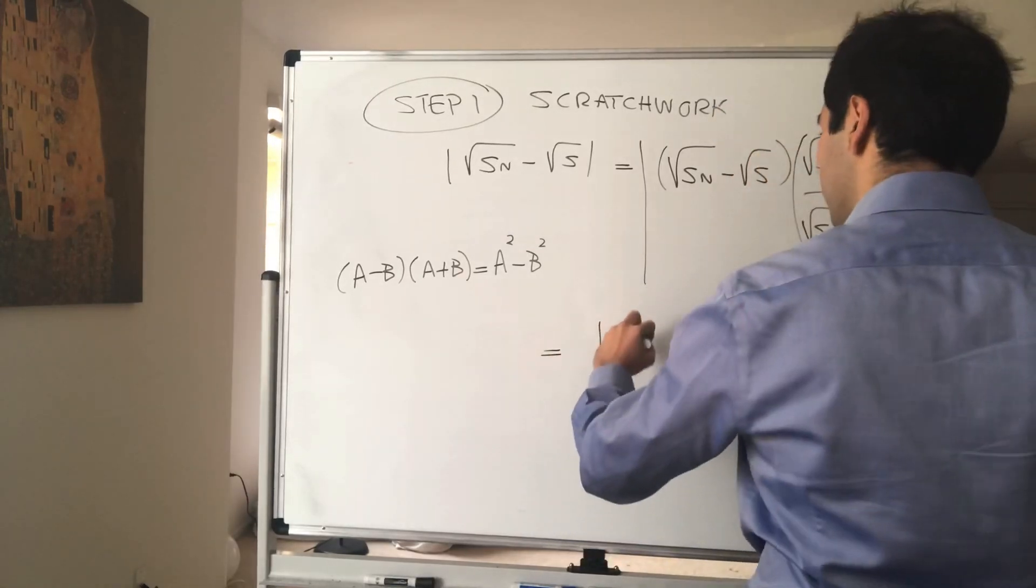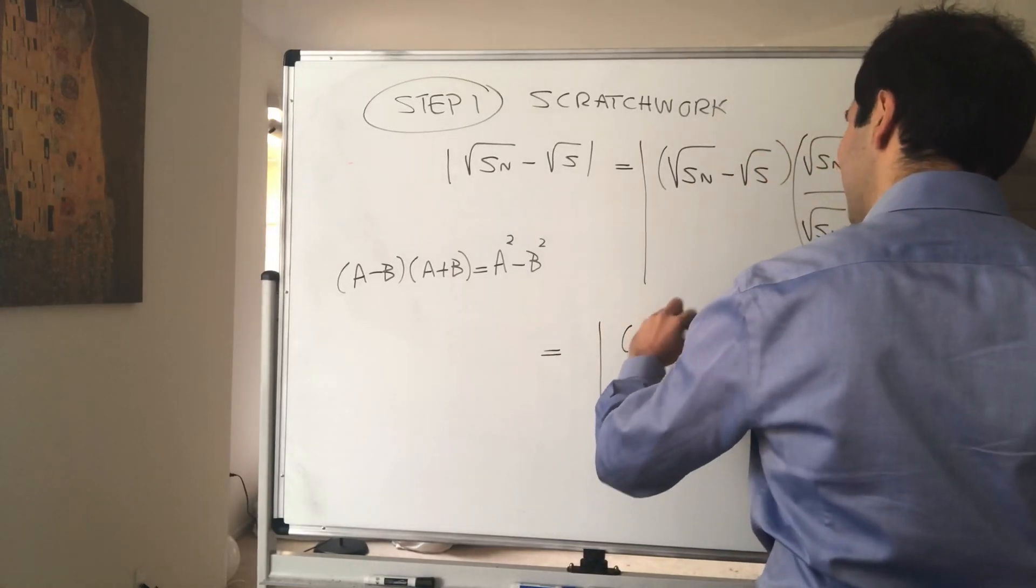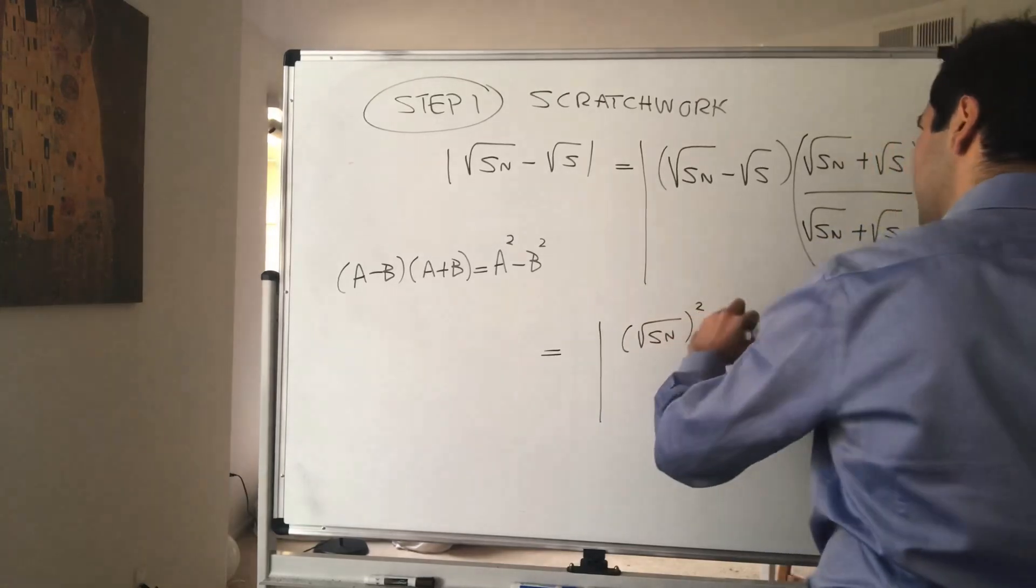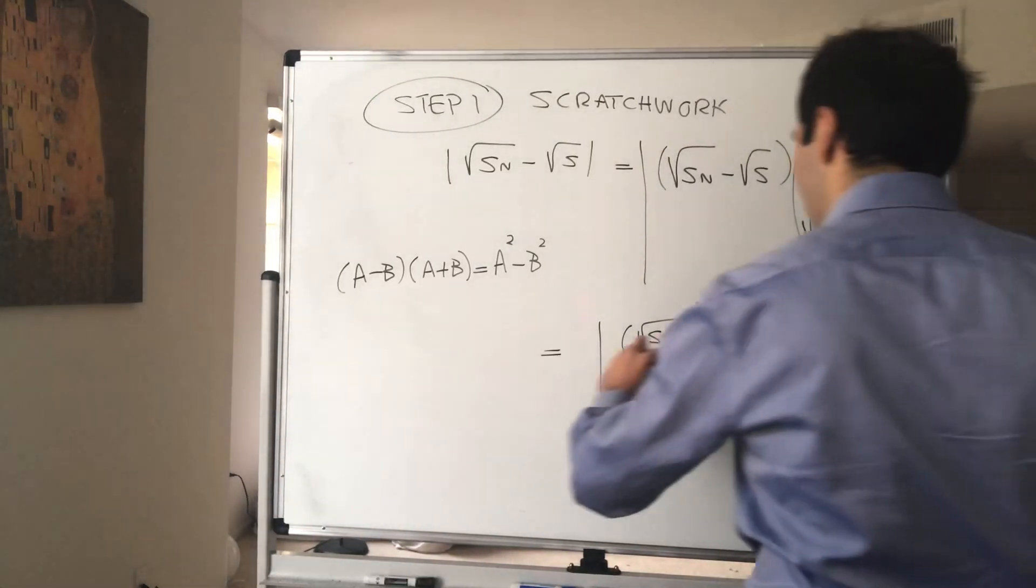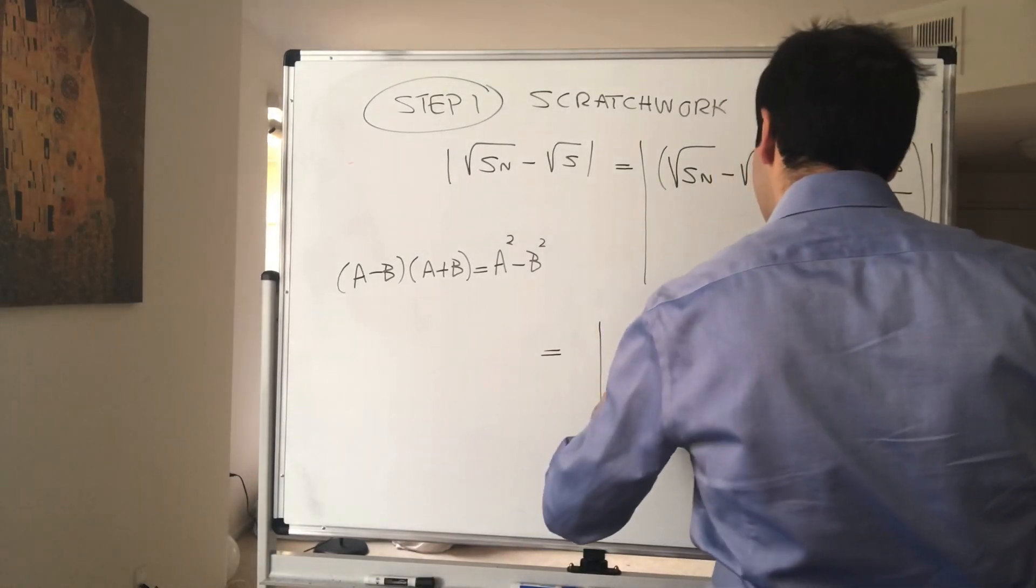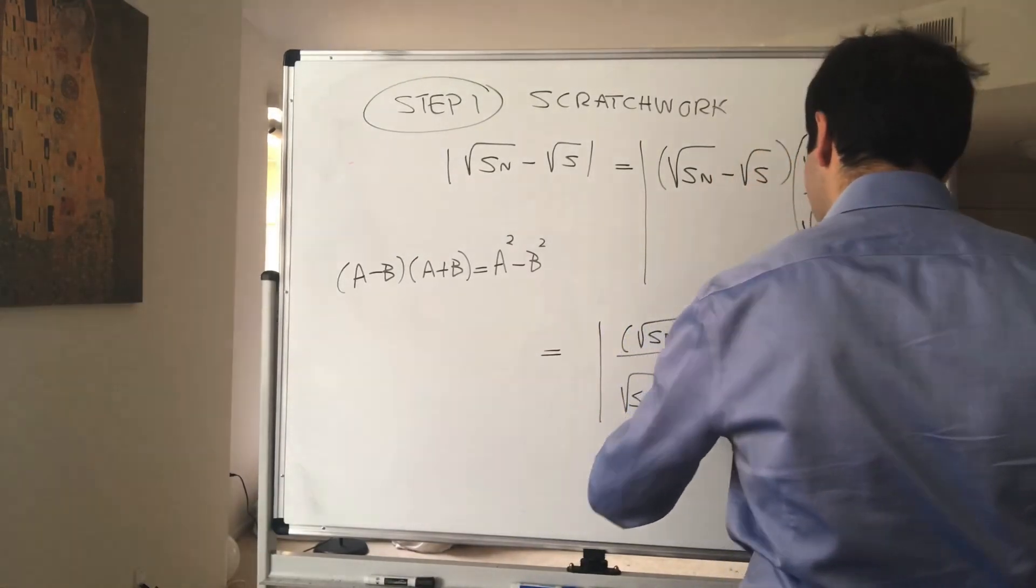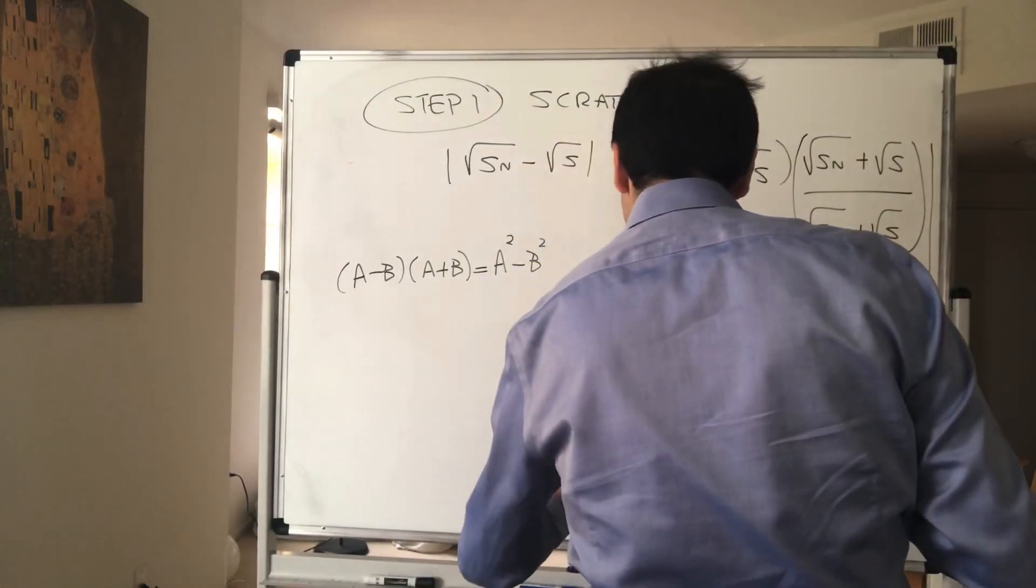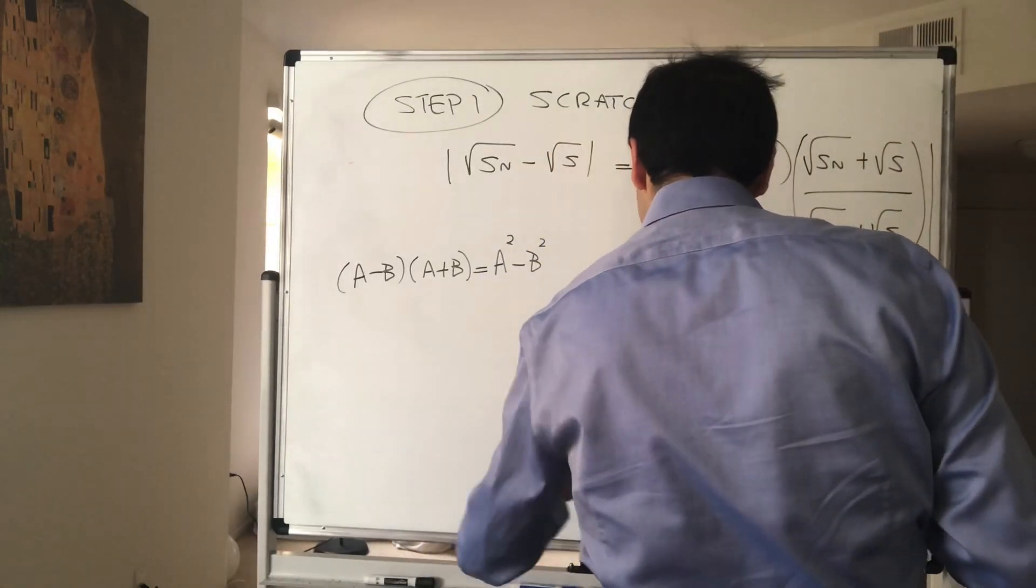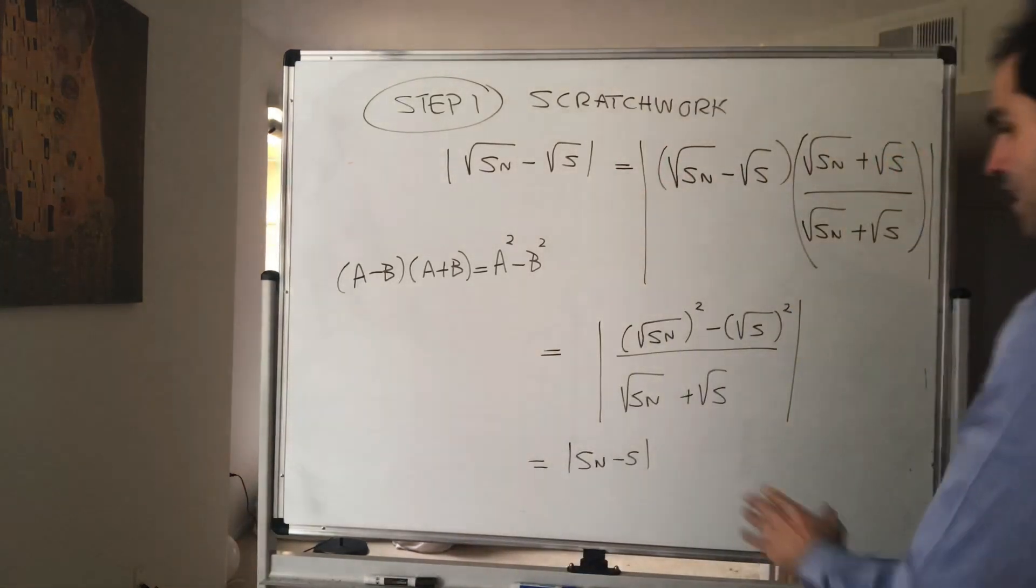Which here, what does this become? I can still take absolute value of square root of Sn squared minus square root of s squared.